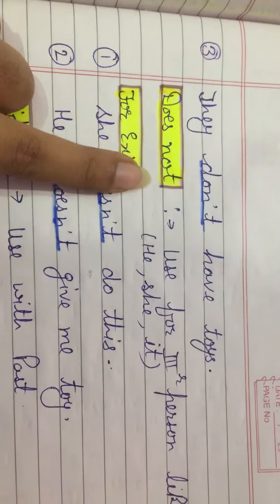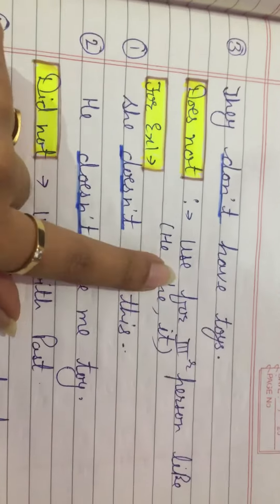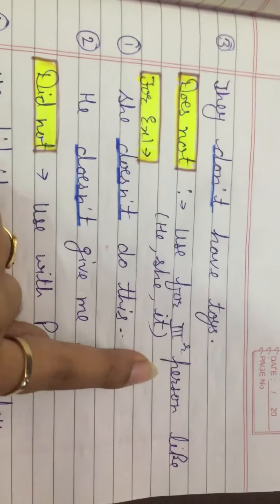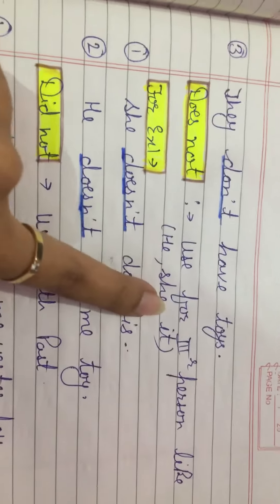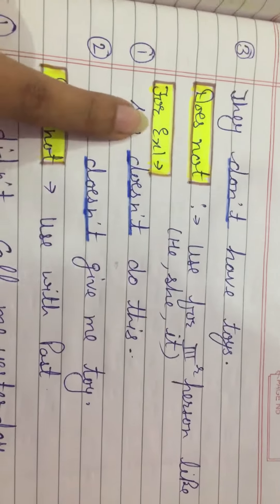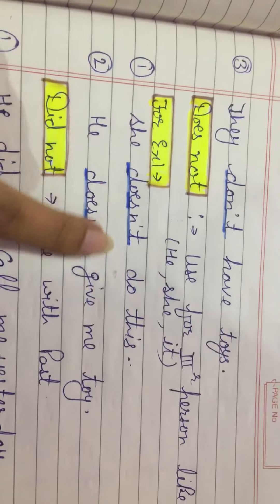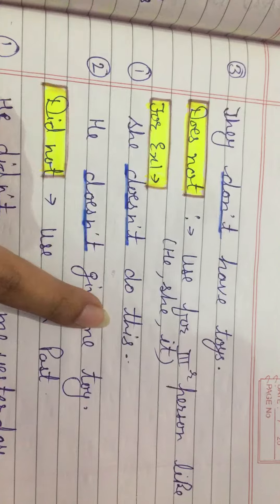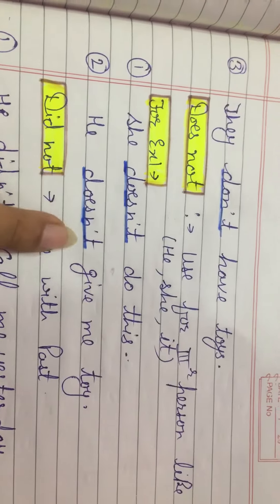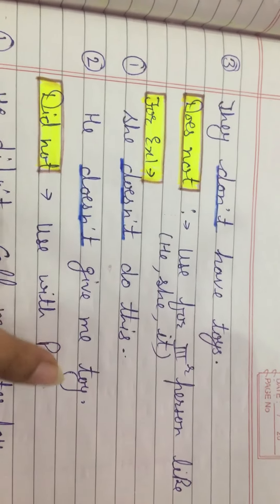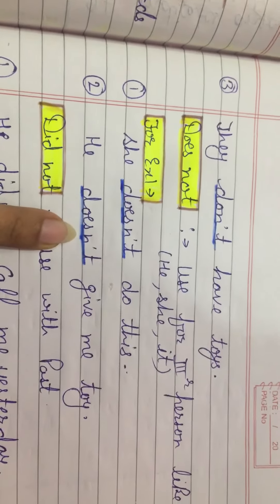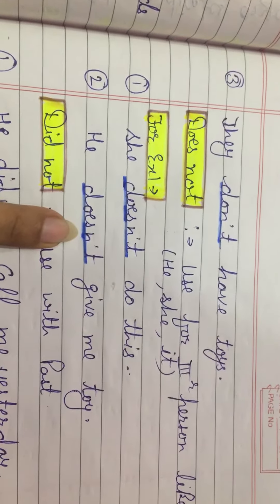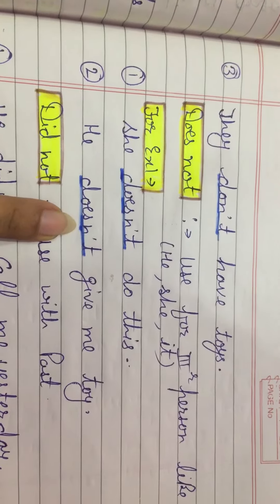Now, use of 'doesn't.' Use for third person like he, she, it. For example: She doesn't do this. He doesn't give me the toy. Here 'doesn't' indicates a negative sentence.